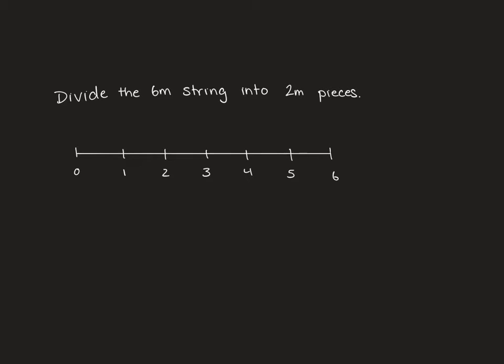If we were taking 6 meters of string and dividing it into 2 meter pieces, we'd end up with 1 piece, 2 pieces, and 3 pieces. So that's fairly easy for us to write down as 6 divided by 2 equals 3.